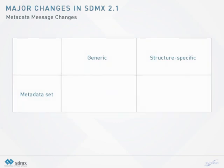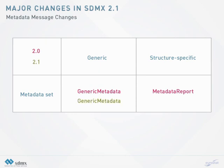Some changes have also been made for the reference metadata messages. The structure specific metadata set, previously called metadata report, is renamed to structure specific metadata to be more consistent with the data messages. The XML structures of the generic and structured metadata sets have also been aligned. In version 2.0, the generic metadata message was structured much differently from the structure specific metadata message. In version 2.1, the two formats are quite similar, with the same tags being used for each level of the metadata set structure, and there is a better equivalence between data messages and metadata messages.